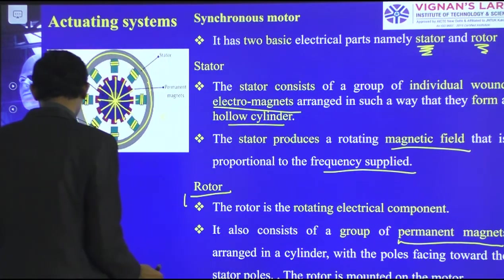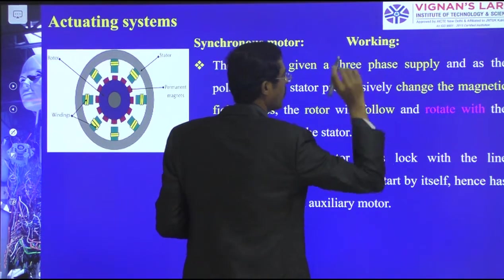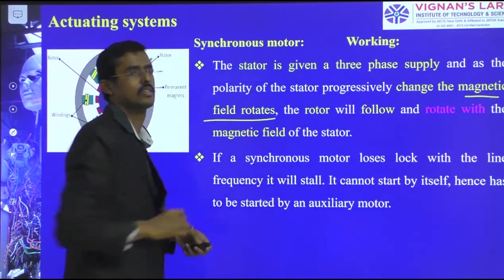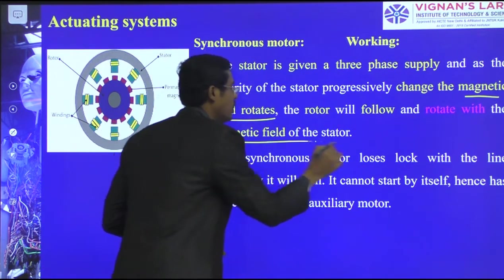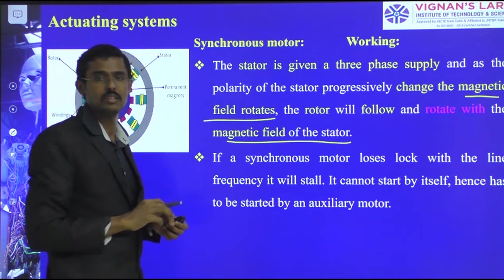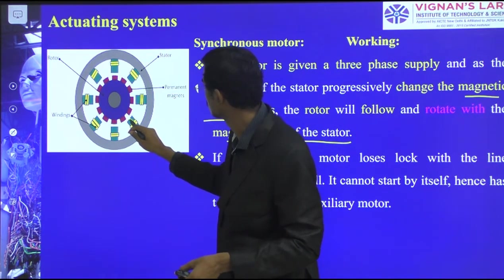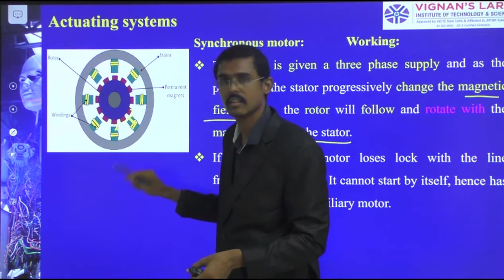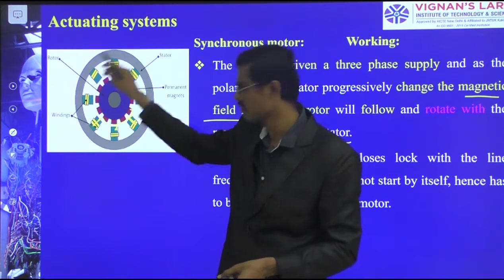The stator is given a three-phase supply. As the polarity of the stator progressively changes, the magnetic field rotates and the rotor follows. When a pole is activated on the stator, the corresponding rotor pole is attracted towards it. When the next stator pole is activated, the rotor is attracted there, and so on, causing continuous rotation of the rotor.